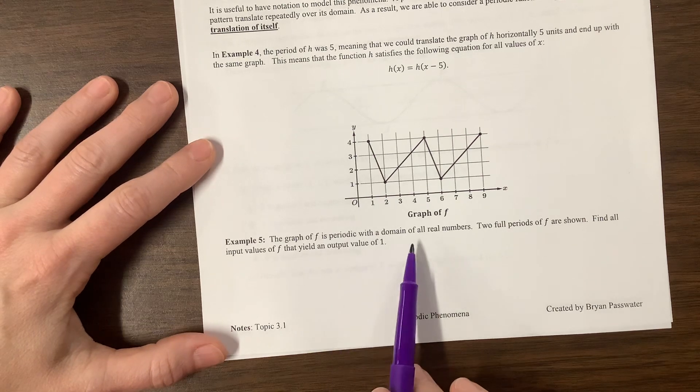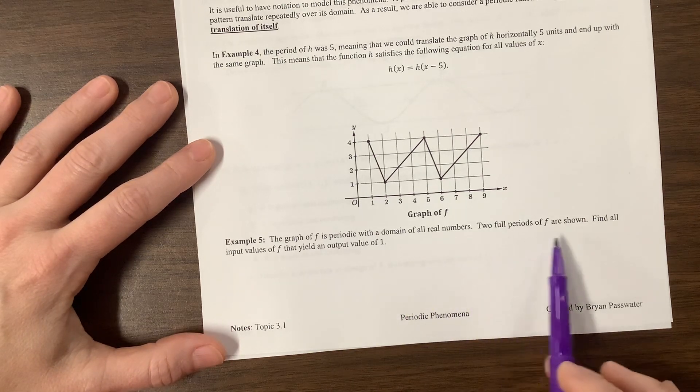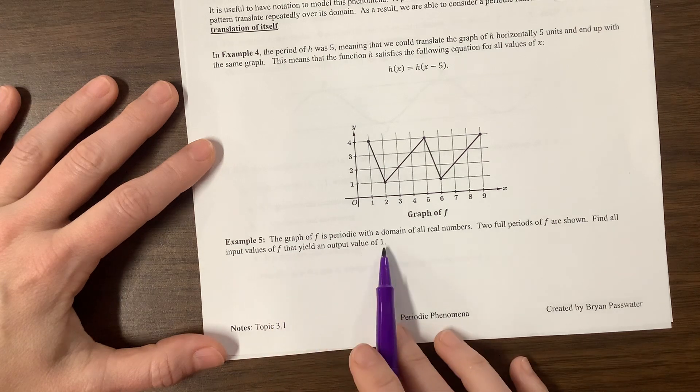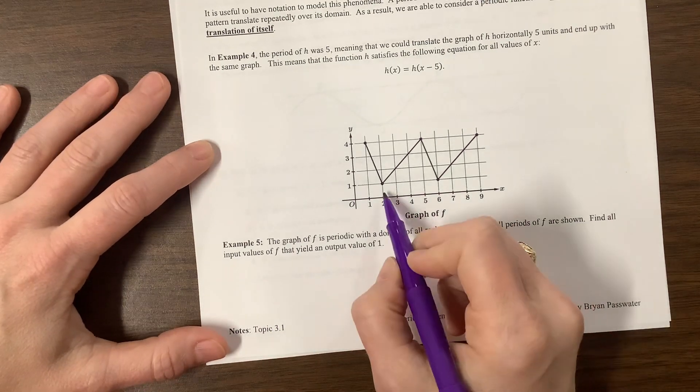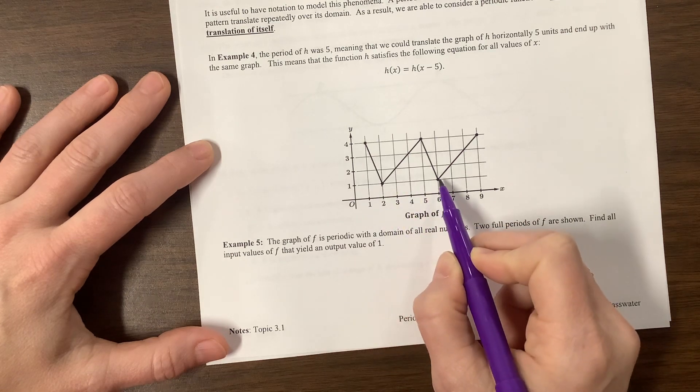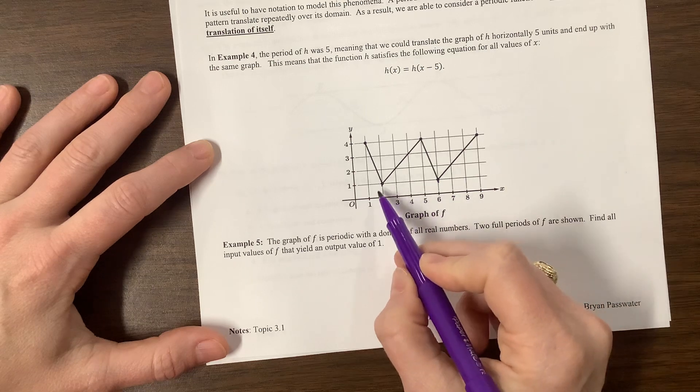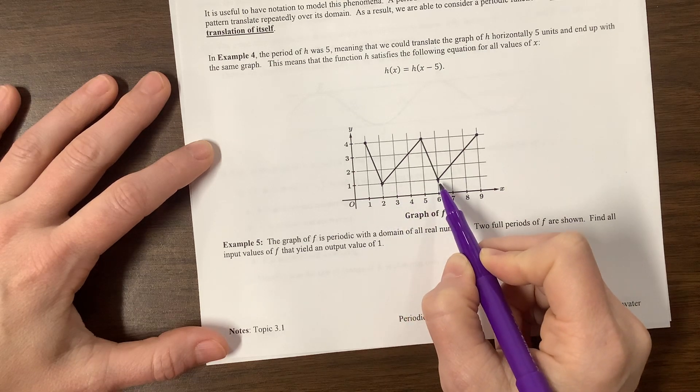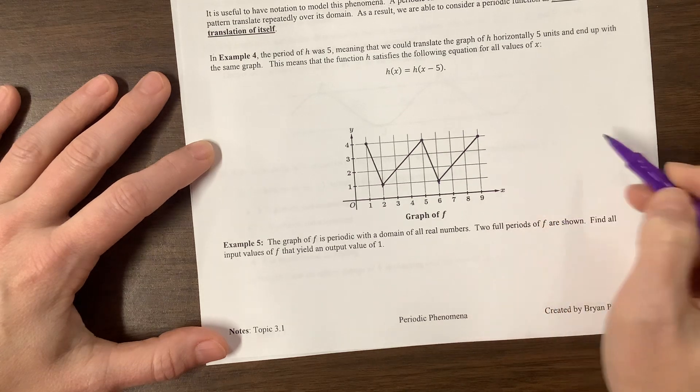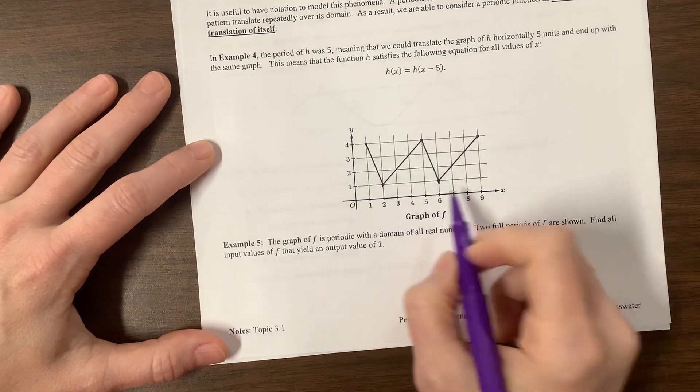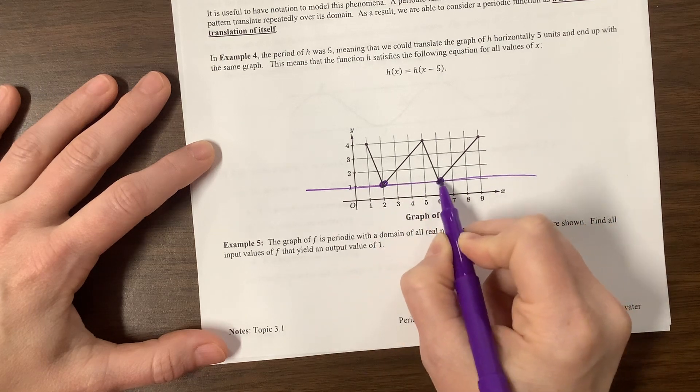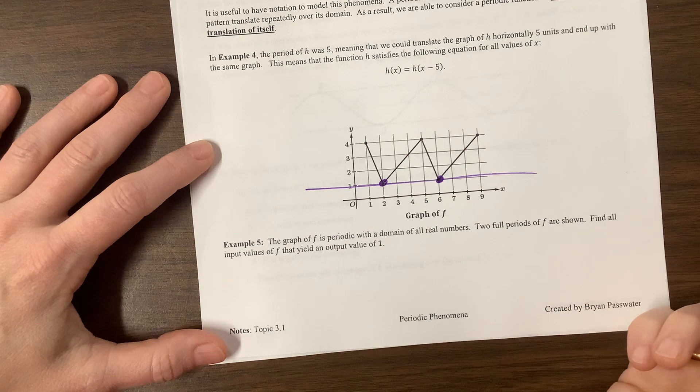The next one, the graph of F is periodic with the domain of all real numbers. Two full periods are shown. Find all input values of F that yield an output value of 1. So how far apart are they? They are, we're here at 2, we're here at 6. That means that was 4 units later. If this is periodic, it's going to happen again at 10. It's going to happen 4 units later. So here's the output value of 1. Where did it happen? It happened at 2. It happened at 6. Therefore, all of this has a period of 4.